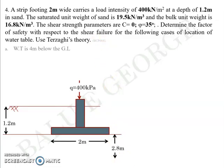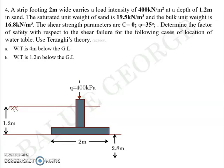There are five cases: Case A — water table 4 meters below ground level; Case B — 1.2 meters below ground level; Case C — 2.5 meters below ground level; Case D — 0.5 meters below ground level; and Case E — water table at the ground level.